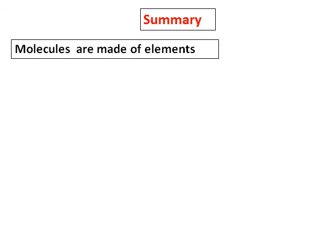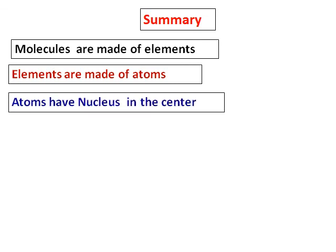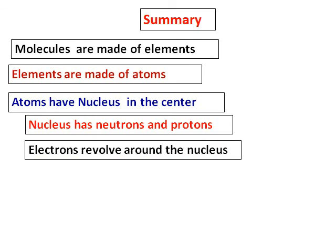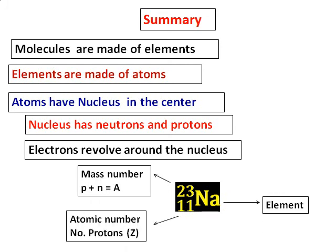Let's just sum up what we have learnt so far. The first thing you learnt is molecules are made of elements. And then you learnt elements are made of atoms. Then, you learnt that atoms have a nucleus in the centre. And the nucleus consists of neutrons and protons. And outside the nucleus, we have electrons. Electrons revolve around the nucleus. A molecule can be represented as given there. Na, the element, the symbol of an element, with 11 protons, the atomic number, and 23 neutron plus proton, the mass number, A.